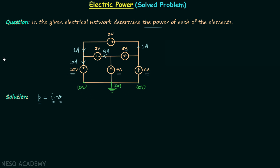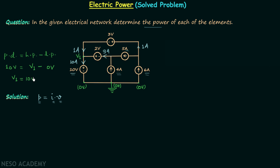We know the potential difference equals the high potential minus the low potential. For the 10 volt source, the positive terminal connects to the unknown point and the negative terminal connects to the 0 volt ground. The ground is the low potential point. Letting the unknown potential be V1, we get V1 minus 0 = 10 volts, so V1 = 10 volts.